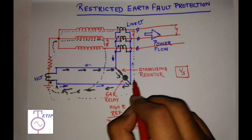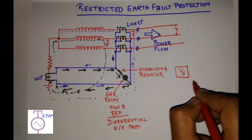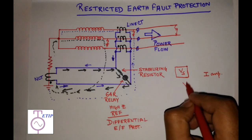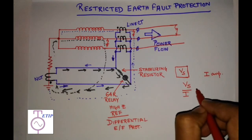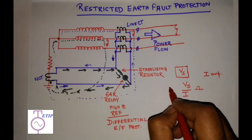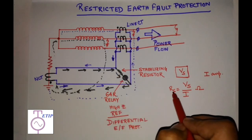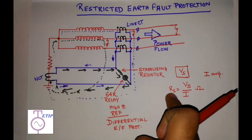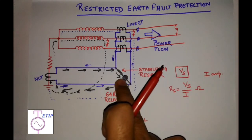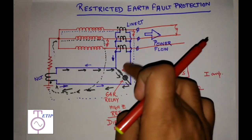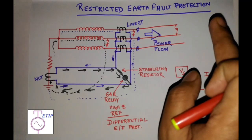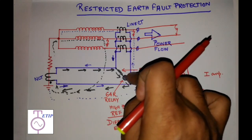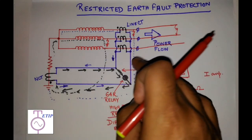Suppose the accumulated voltage is Vs and your relay has been set to pick up for a current of I amperes. Then the value of the stabilizing resistor Rs will be Vs divided by I ohms. If you connect a resistor Rs of that value or higher and apply voltage Vs, the resulting current will be lower than the relay's set current. So for any fault outside the protective zone, the relay will not pick up. This is how the stabilizing resistor is sized — it has a direct relation with the relay setting.